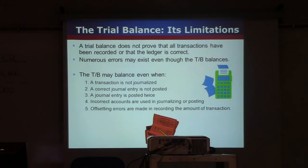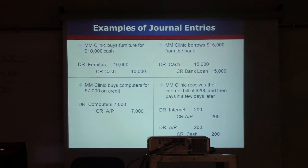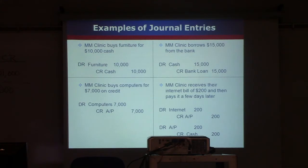I'm going to give you a few journal entries as examples to refer back to when you are doing questions for assignments or preparing for tests. The first slide shows four journal entries. The first one: MM Clinic buys furniture for $10,000 cash — debit furniture, credit cash.